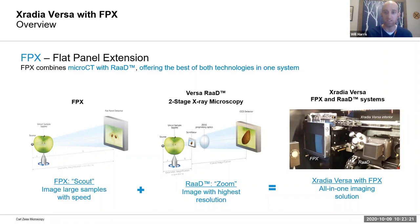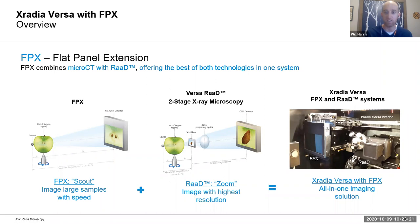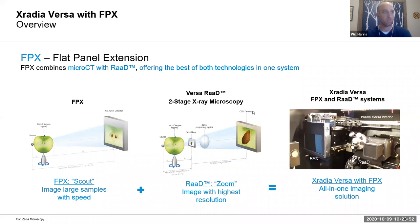It turns out if you combine both types of technologies, you get the best of both worlds. Traditional designs are good at looking at things with a speed advantage, and the instrument coming to Florida will actually have both the advanced optical detector design as well as a flat panel detector integrated — this covers the broad spectrum from pretty big objects down to small things at super high resolution.